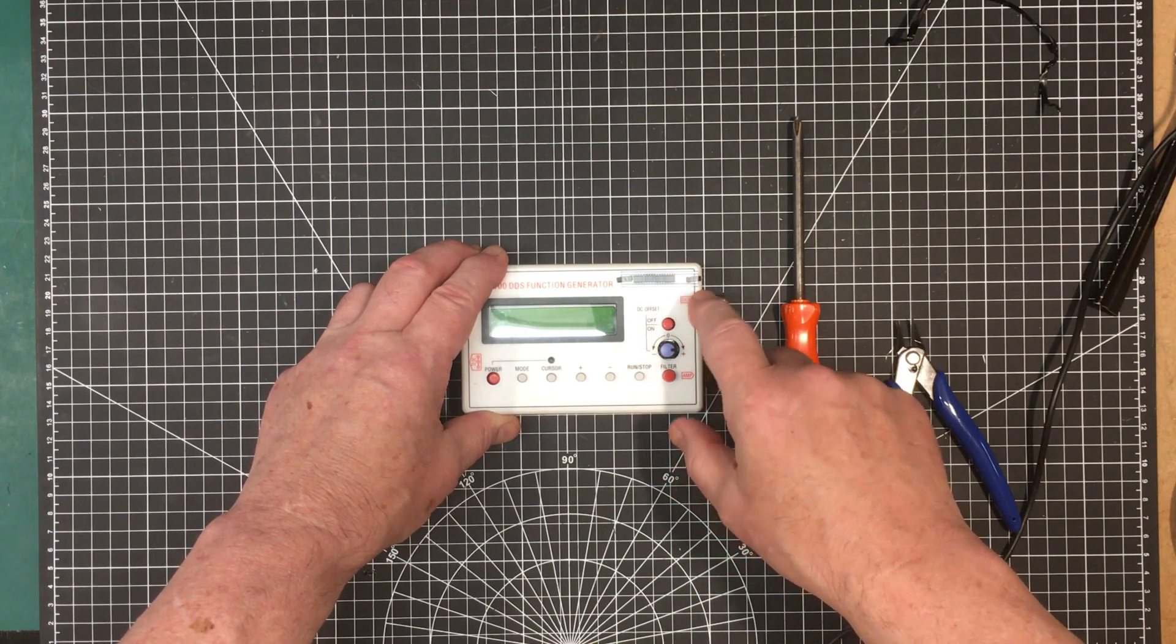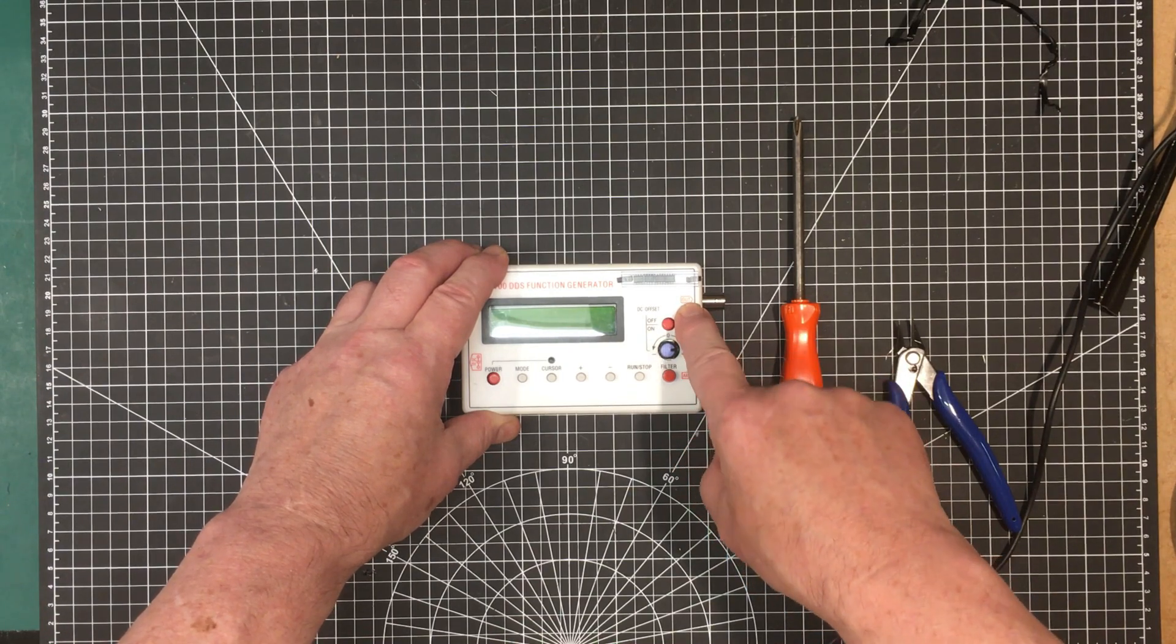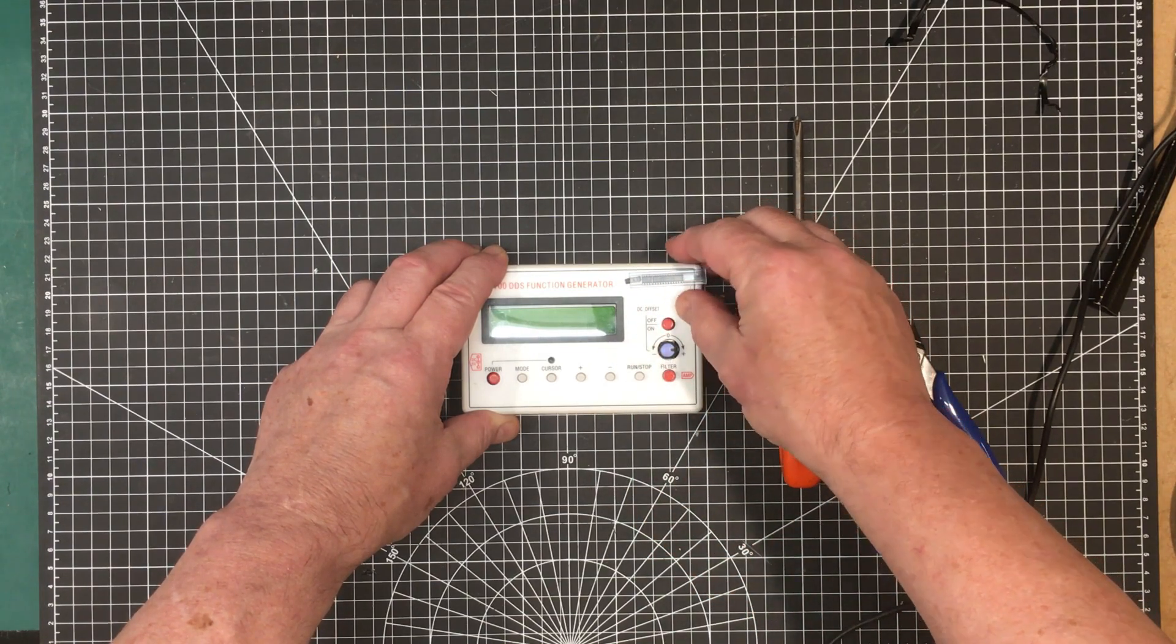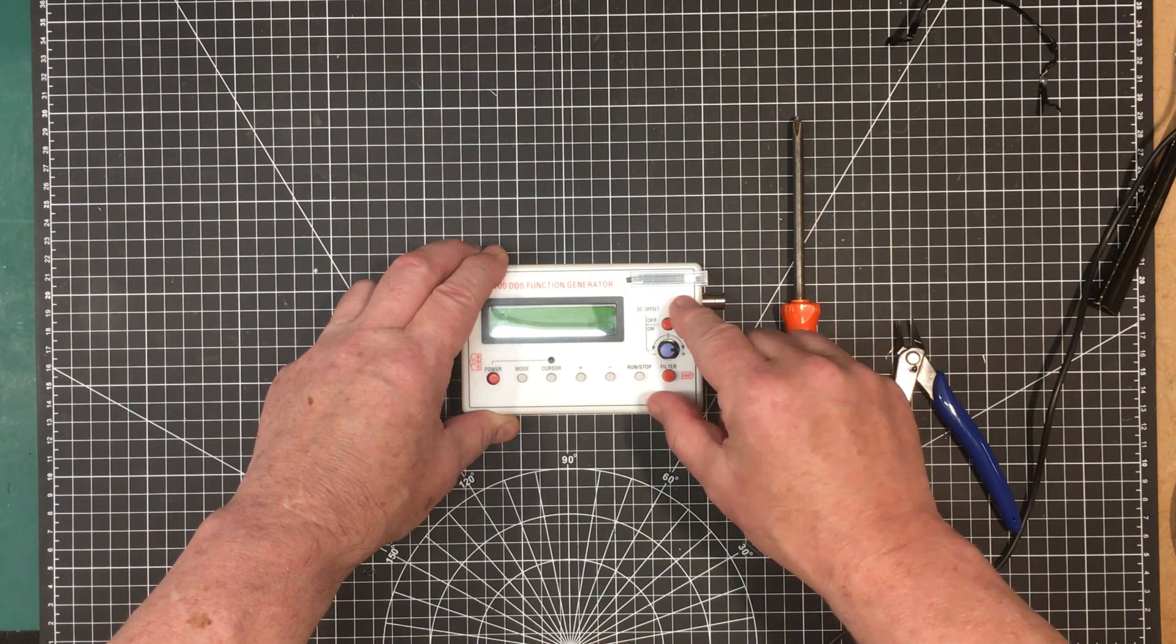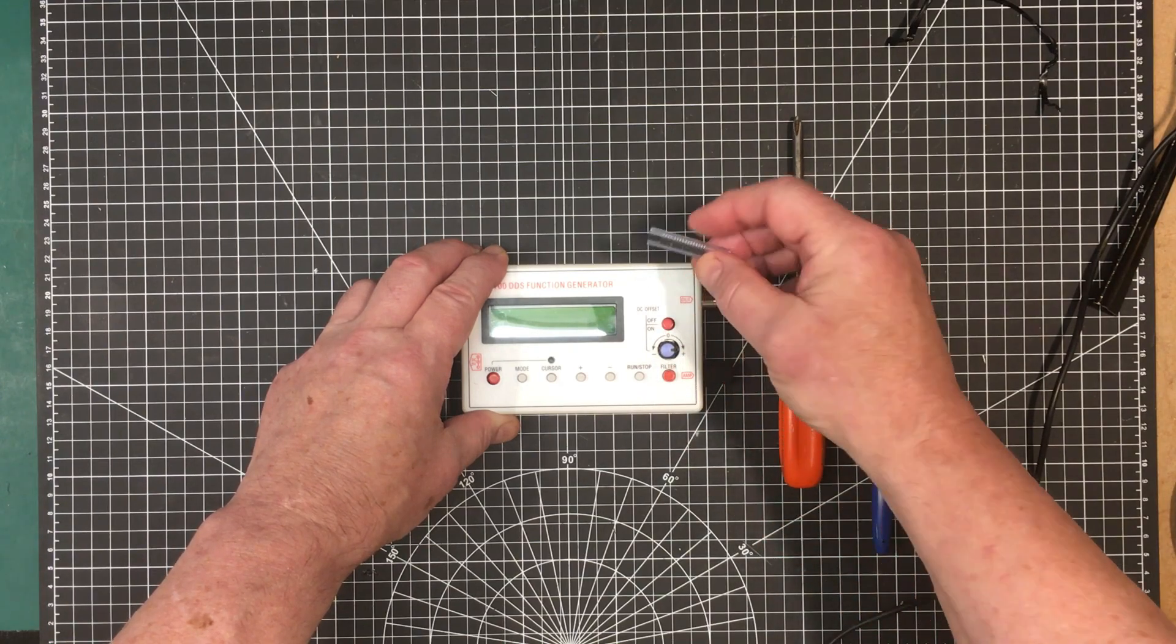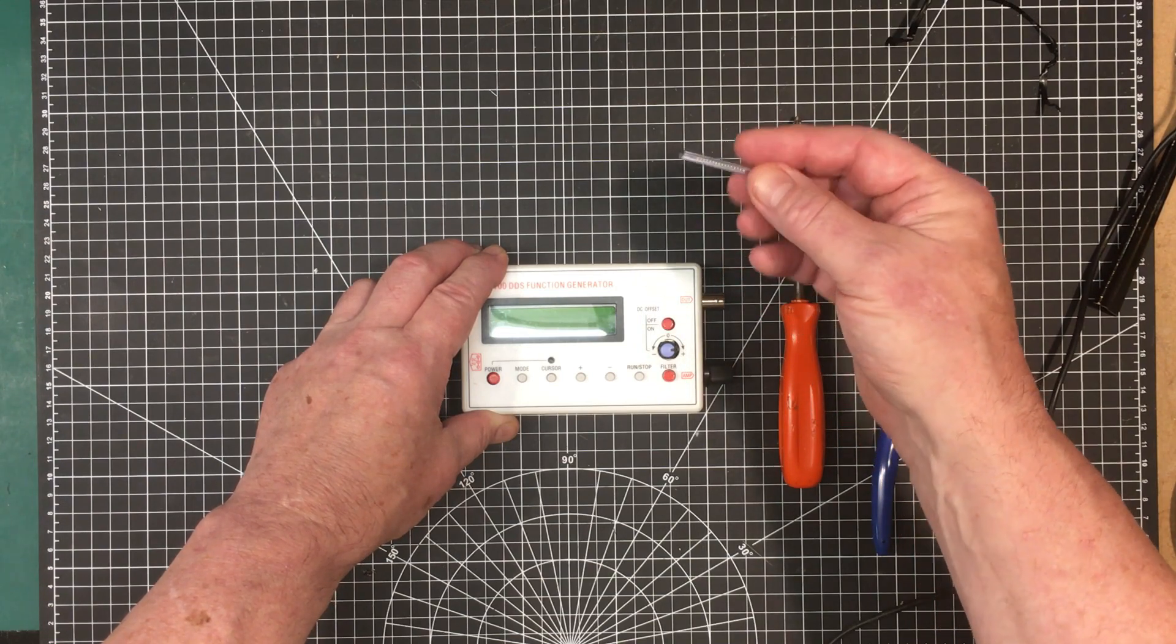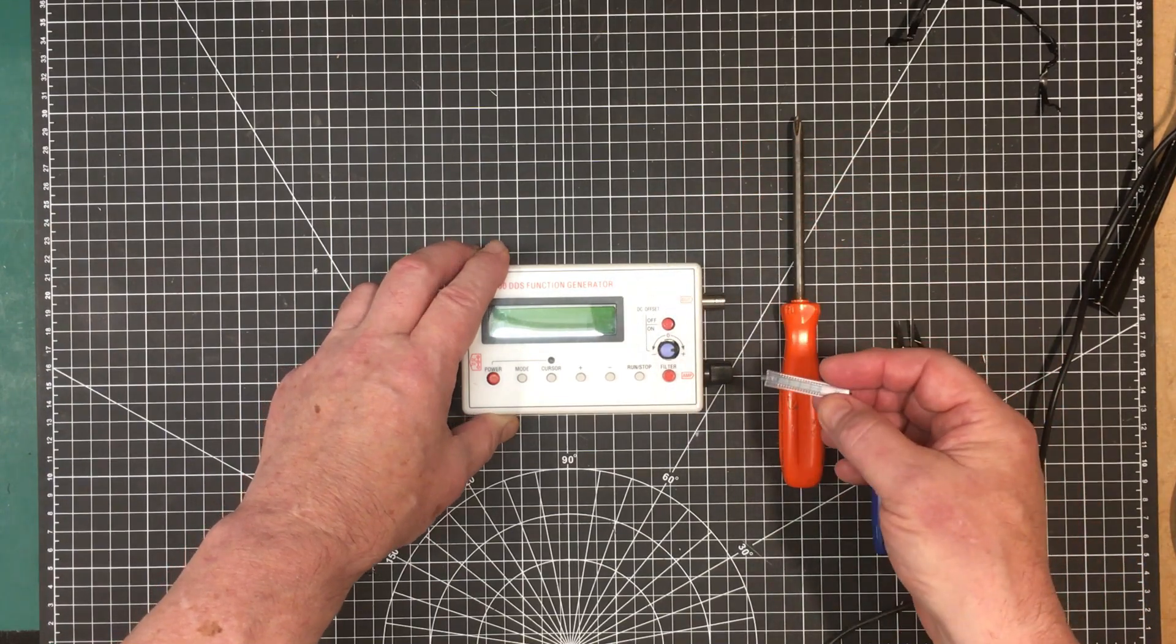I'm going to replace the two fake TL074 op-amps in this with these name-brand NE5532s that I have here. They're both dual-ended op-amps, jellybean stuff, except this is slightly higher spec than the TL074 and they're brand name. They're genuine components, not fakes like what we have in here.